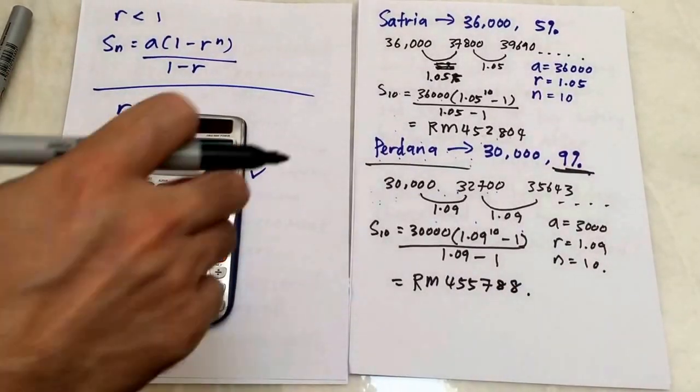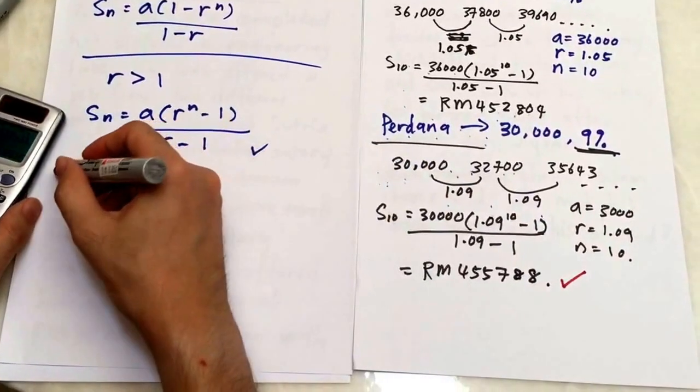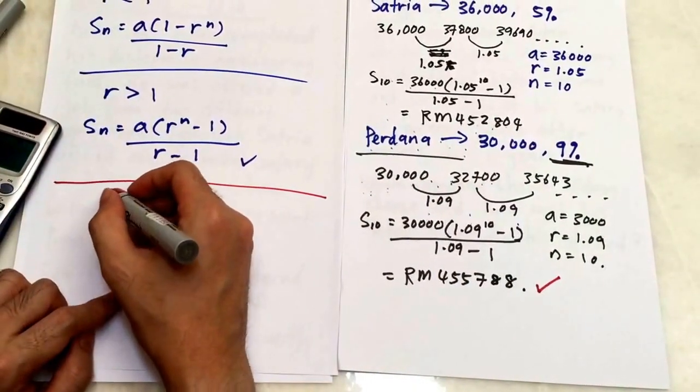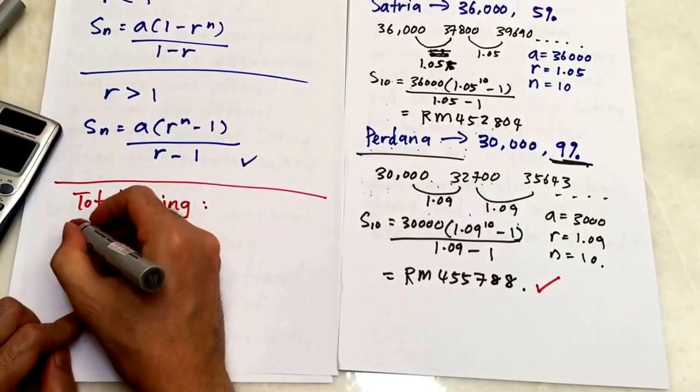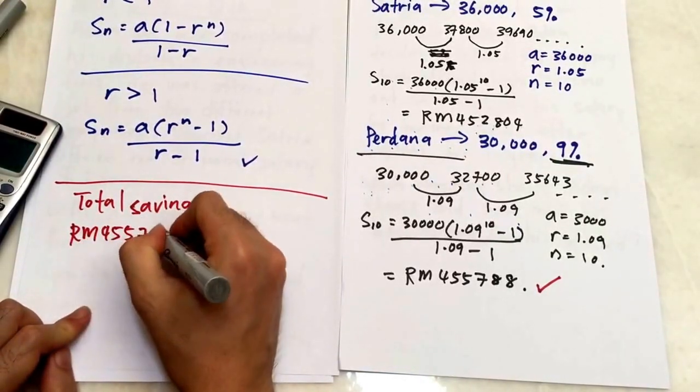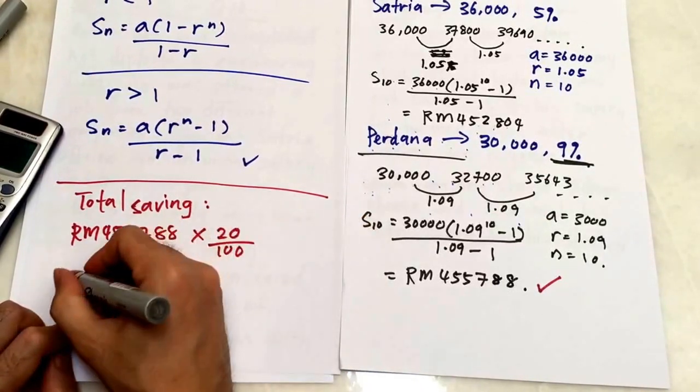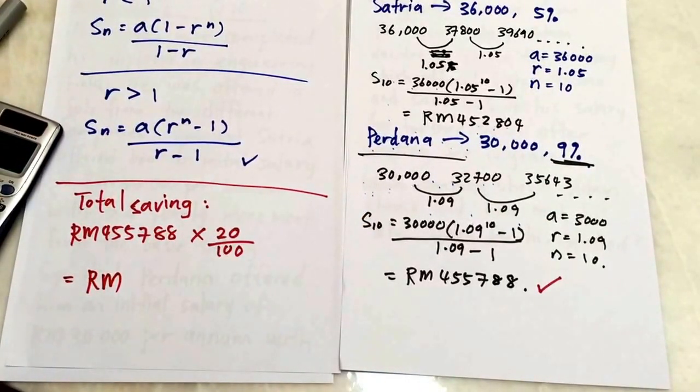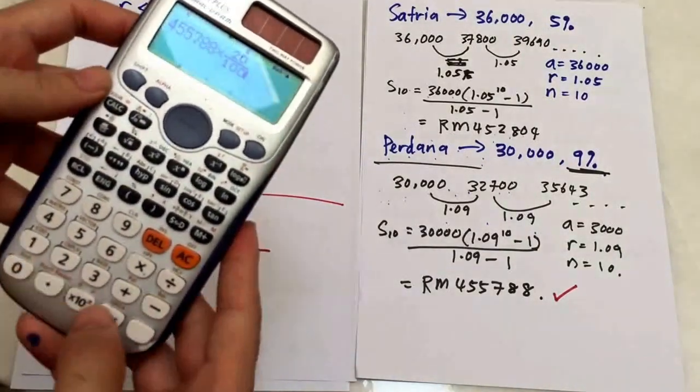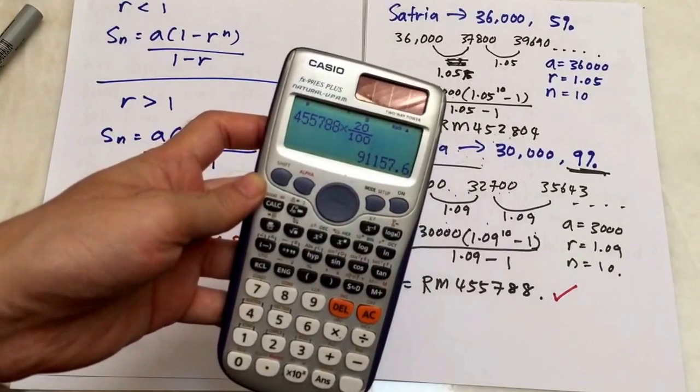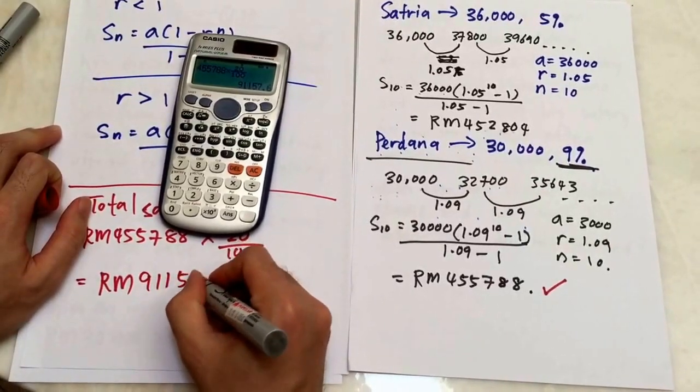Obviously if you are Adam, you will choose the highest one. After 10 years, this one is actually highest. So I choose the highest one. I'm going to do my working here. The total saving will be the highest amount, and then you save 20% of it. So I'm going to multiply by 20%, which is 20/100. Then I can find out my final answer. So 455,788 × 20/100—I will get 91,157.6. The total saving will be RM91,157.60.